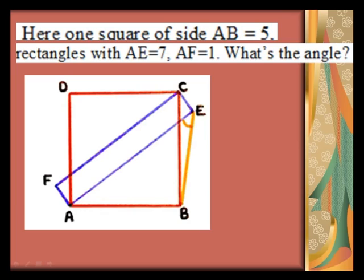AECF is a rectangle. Then what about angle AEB where AE equals 7, AF equals 1, and AB equals 5?